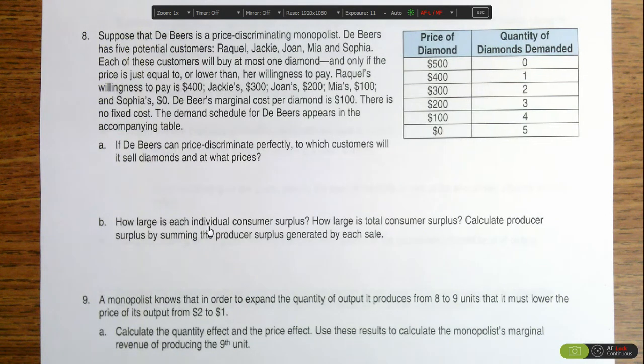This portion of the question is asking us to determine what the individual consumer surplus is for each person purchasing a diamond, as well as the total consumer surplus and what the producer surplus will be.